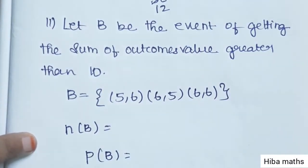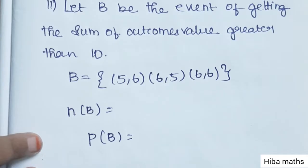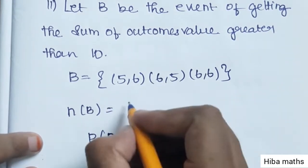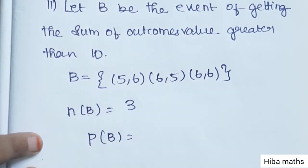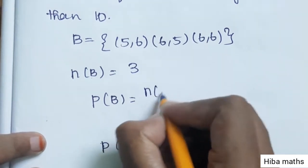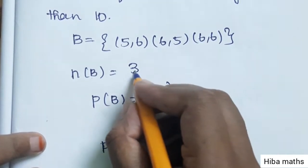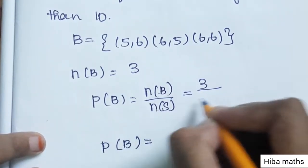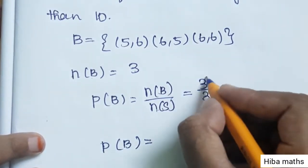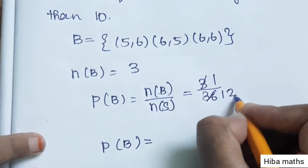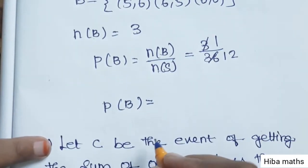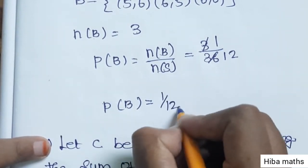These give sums of 11, 11, and 12. So n(B) = 3. P(B) = n(B) / n(S) = 3 / 36 = 1/12. So P(B) = 1/12.